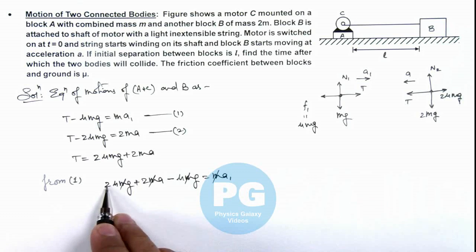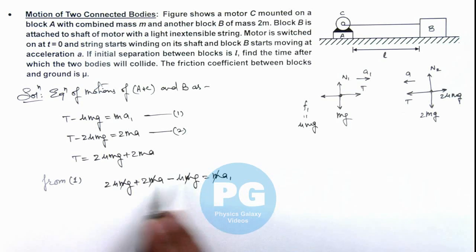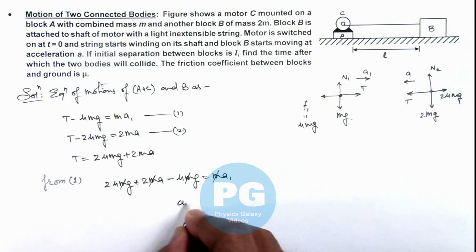And from 2μmg this μmg, μg will be subtracted. So the value of a1 we are getting is μg plus 2a.